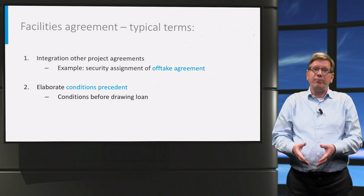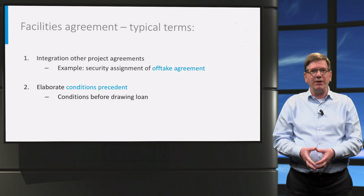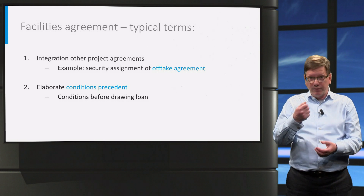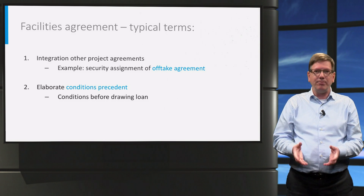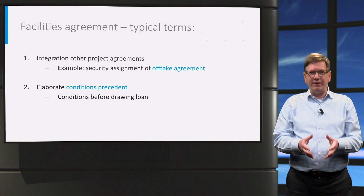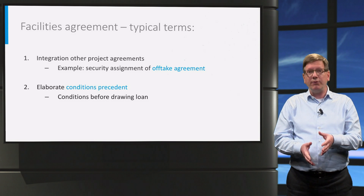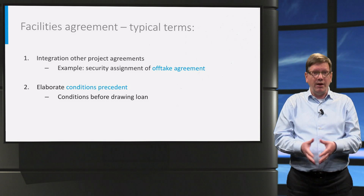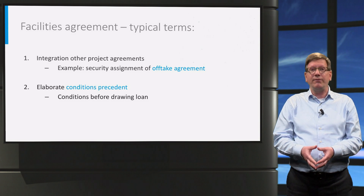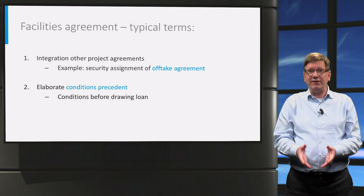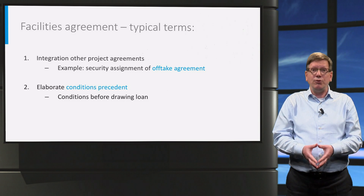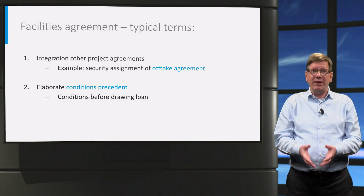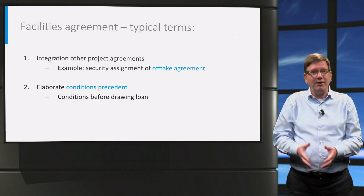There will be an elaborate set of preconditions that the project company needs to fulfil before it can draw down the loan. These are called conditions precedent, and their purpose is to make sure that everything has been put in place for the project's success. For example, the issuance of the necessary permits is a very important condition precedent, or CP, because you don't want the project earnings to be held up due to a delay in the licensing.